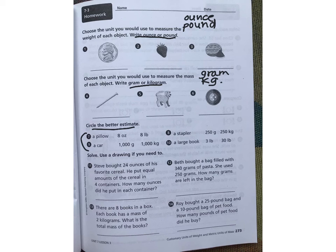On the next section, it says you don't need to do the drawing because you can also just write a math problem. Let's do one of those together. Steve bought 24 ounces of his favorite cereal. He put equal amounts of cereal in four containers. So he's dividing it into four containers. How many ounces did he put in each container? So he starts with 24, but he's dividing, because he's putting it in the different containers. So my equation would be 24 divided by four will tell me how many ounces are going in each container. You'll have to solve.